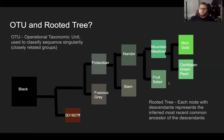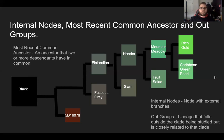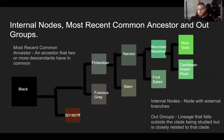Internal nodes, most recent common ancestor, and outgroups: the most recent common ancestor is an ancestor that two or more descendants have in common. Rich Gold and Caribbean Pearl go all the way down to Mountain Meadow, and Nander and Siam go down to Finlandian. Internal nodes are nodes with external branches — Finlandian has an external branch of Siam, Nander has one for Fruit Salad, and Mountain Meadow has one for Caribbean Green Pearl.